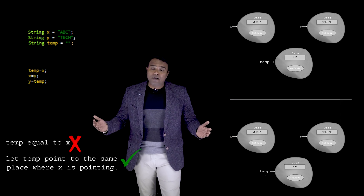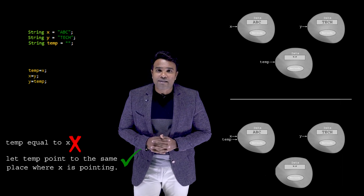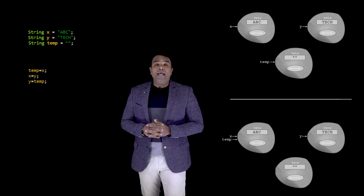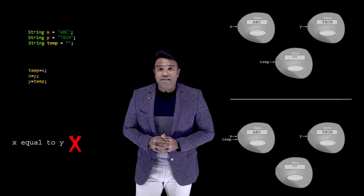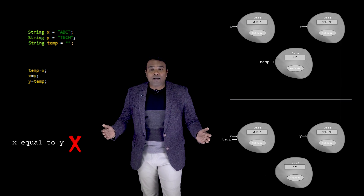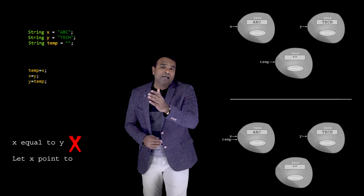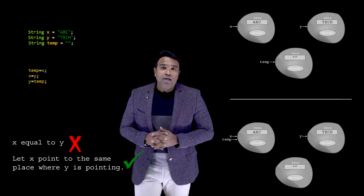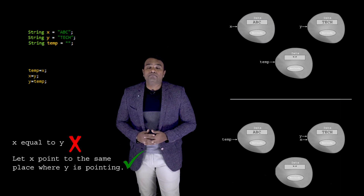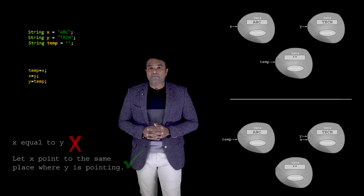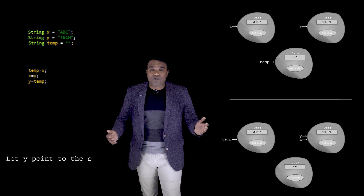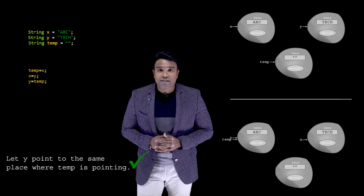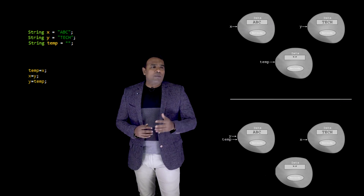When I implement that, this is the change that happens. The second line is x = y. Again, since x and y are references, you should read it as: let x point to the same place where y is pointing. When implemented, x is now pointing to the same place where y was pointing. The last line, y = temp, means y points to the same place where temp is pointing, and this is what happens.